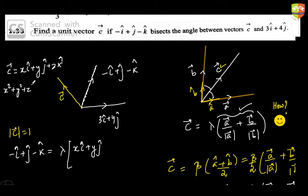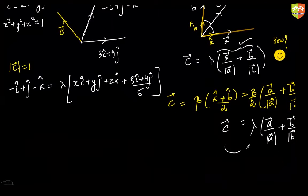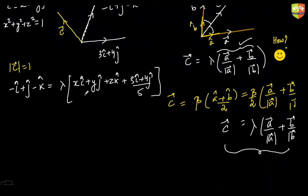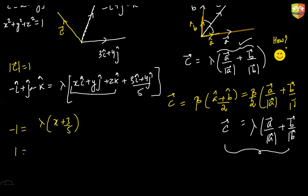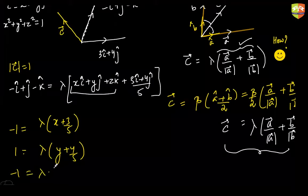Since c is already a unit vector, its unit vector is itself. The unit vector along 3i+4j is (3i+4j)/5. So the bisector equation becomes: (-i + j - k) = lambda*(c + (3i+4j)/5). Comparing components: -1 = lambda*(x + 3/5), 1 = lambda*(y + 4/5), and -1 = lambda*z.